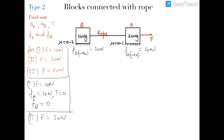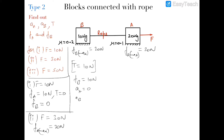Case 2: F equals 30 newtons. F_A max can only balance 20 newtons, so it acts to its maximum value of 20 newtons. Out of 30 newtons, 20 are balanced by F_A max, so tension in the rope will be 30 minus 20, which is 10 newtons. Block B's friction is capable of balancing 20 newtons, so it easily balances this 10 newton pull and acts as 10 newtons. Tension is 10 newtons and acceleration of both blocks is 0.